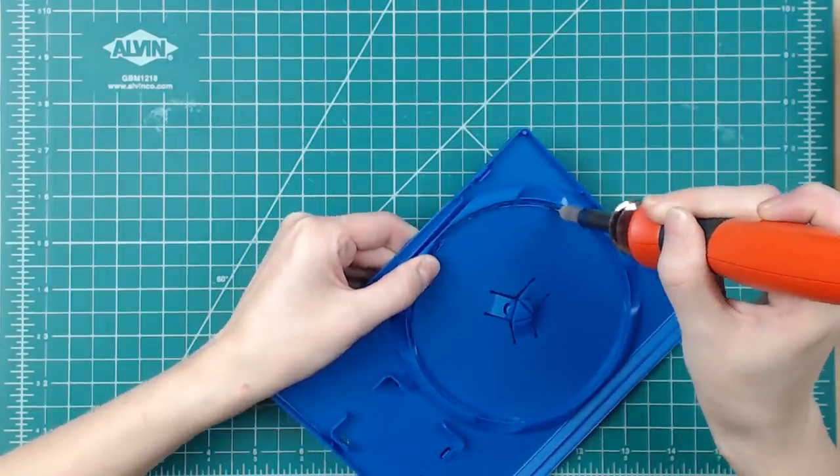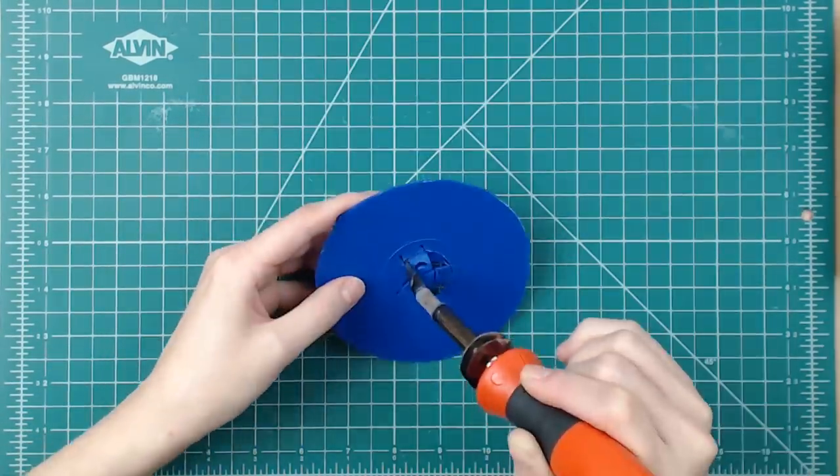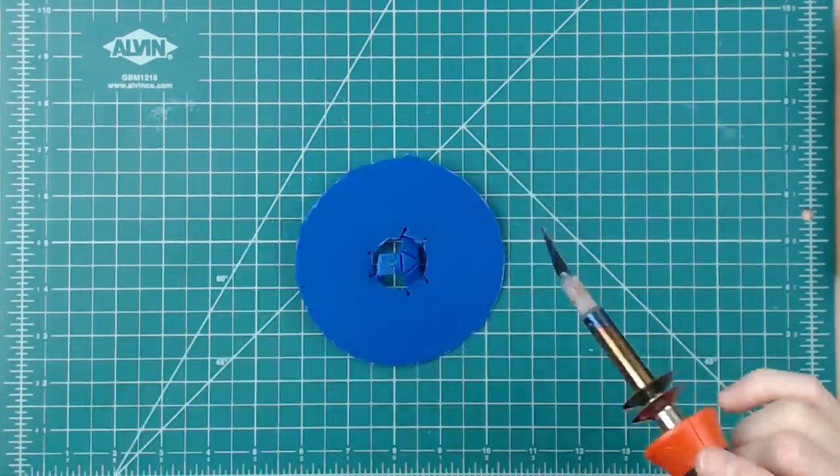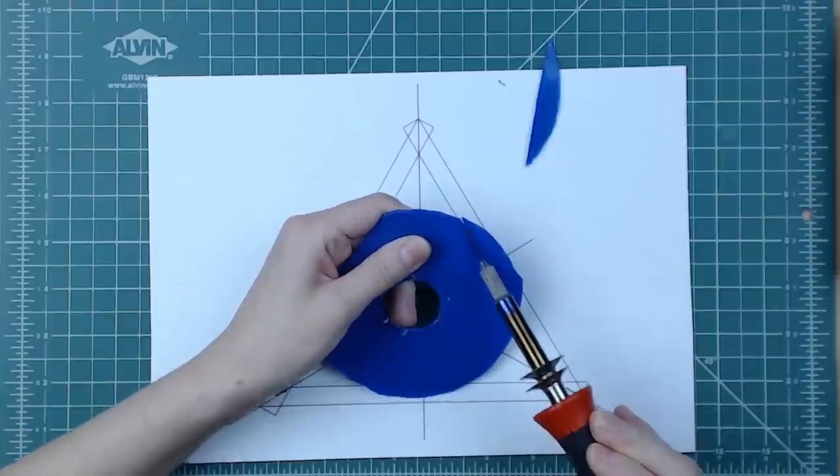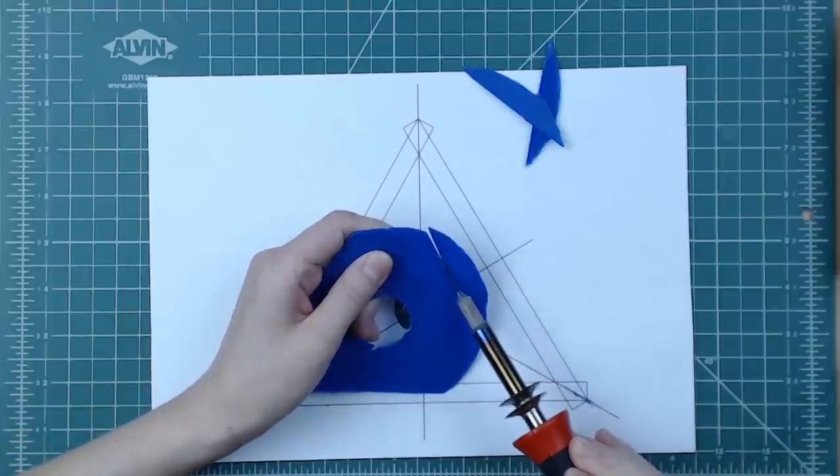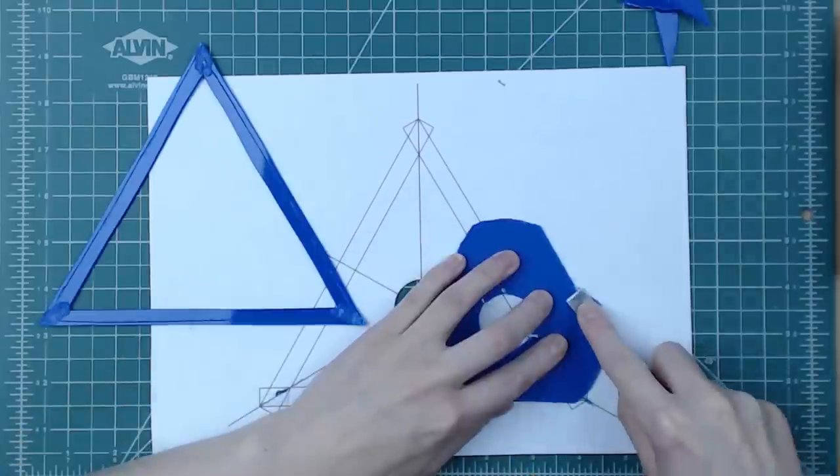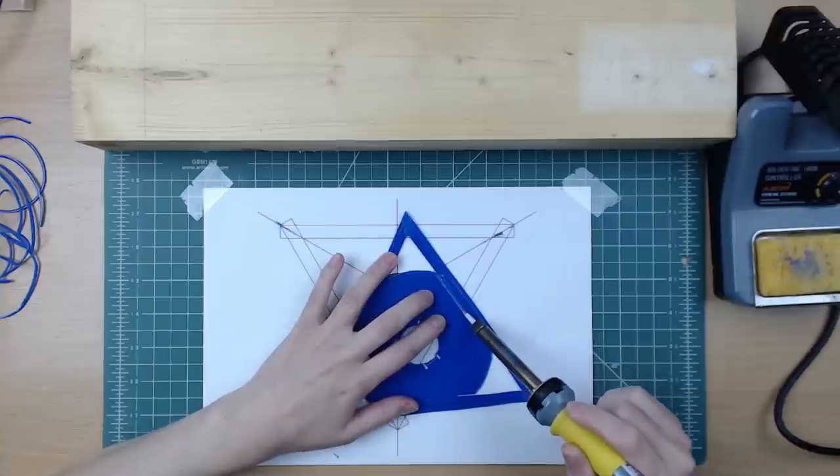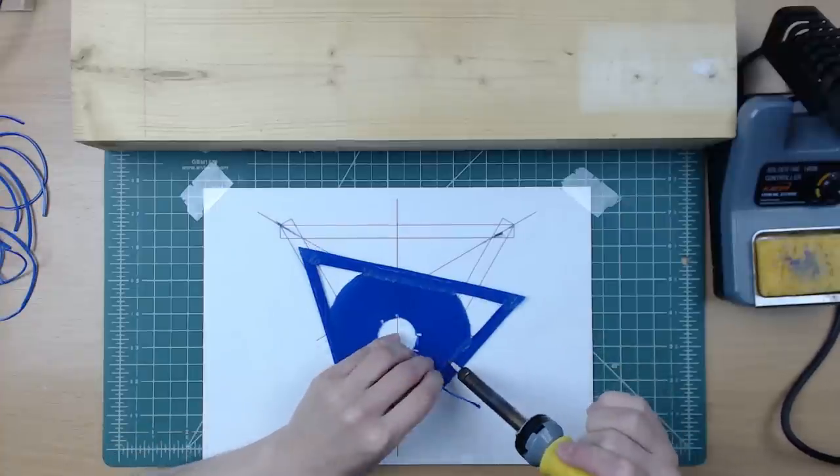For the top of the lampshade, I cut out a circle from the back side of a case and cut it further to fit into the triangle, not forgetting about a hole for the lamp fitting. Next, I welded the two pieces together, adding filament as needed.